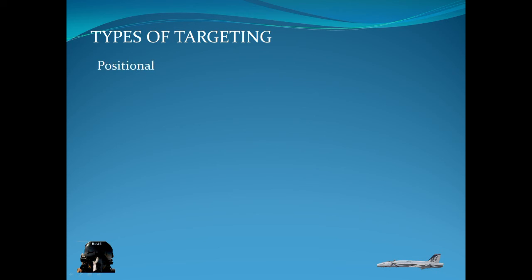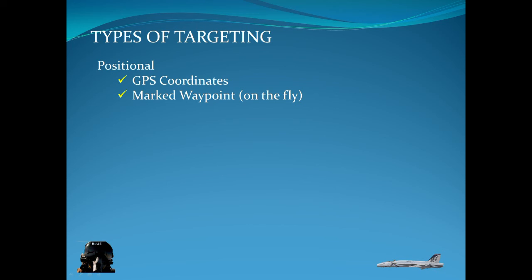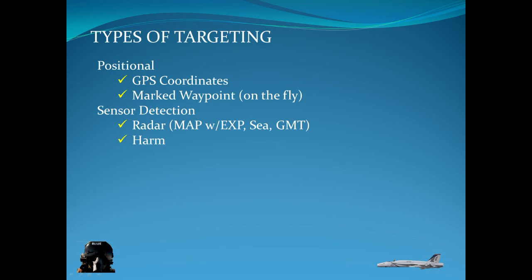Now let's look at the types of targeting. There are the positional type, which essentially are GPS coordinates — if you watched my previous video you've seen how to enter those and set them up. And a marked waypoint on the fly: you fly over an area of interest, mark the area, and then you can target that area. There's also sensor detection like the radar, the map mode with the expanders, the C mode, the ground moving target mode. There's HARM — you can target with HARM and transfer the target onto your radar, transfer it to your FLIR, and so on.